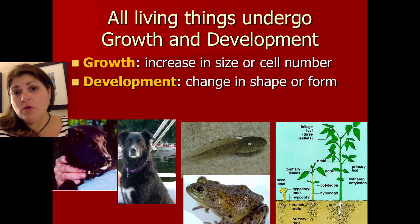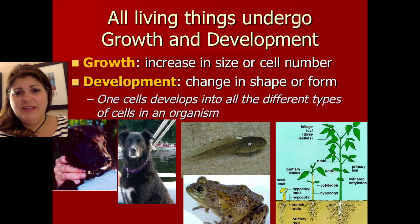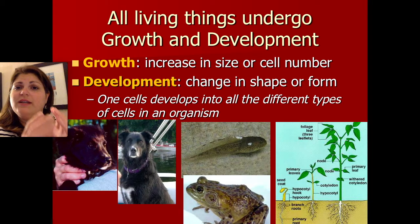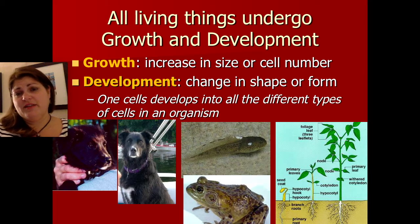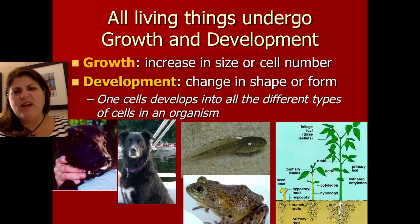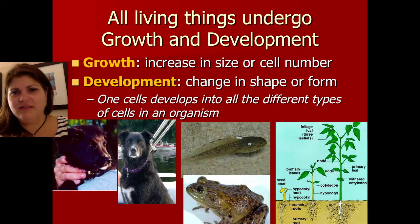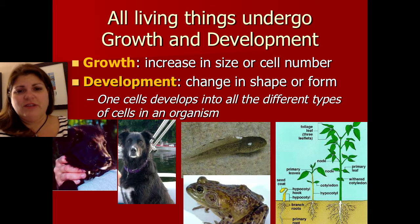There's one very important type of development, and that is the development that occurs in many multicellular organisms as they go from one single embryo — a single fertilized egg — to being a multicellular organism. That single cell has to give rise to all the different kinds of cells: muscle cells, skin cells, heart cells, and so forth. That is called cellular differentiation, and it's very important in biology.